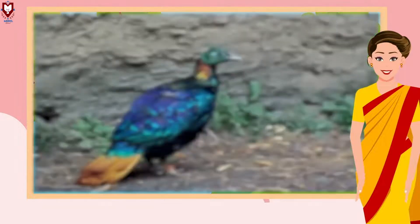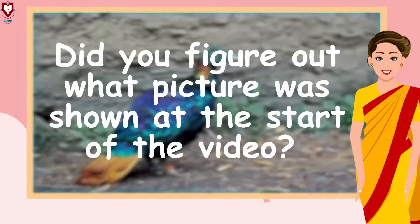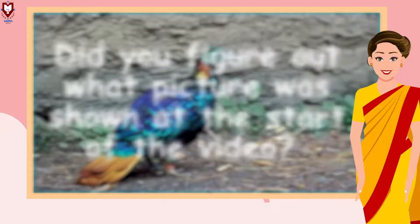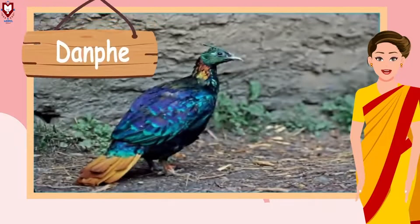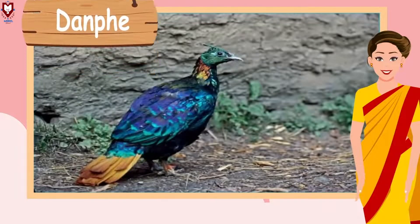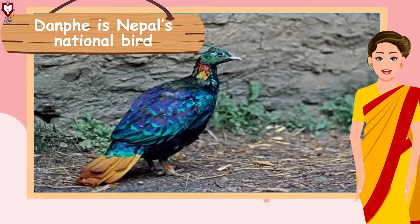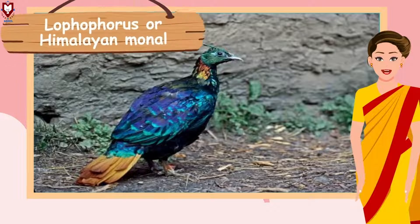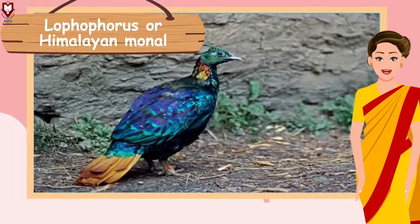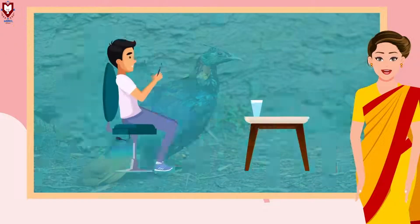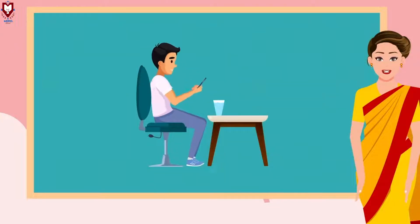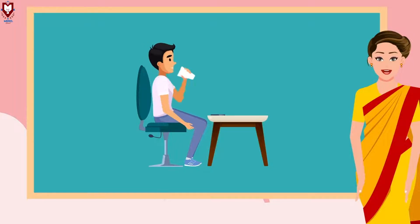So, did you figure out what picture was shown at the start of the video? Yes, it was the Danphe! Danphe is Nepal's national bird — it is called Lophophorus, or Himalayan Monal, in English. Now drink a glass of water and keep yourself hydrated. Thank you, see you in the next video!